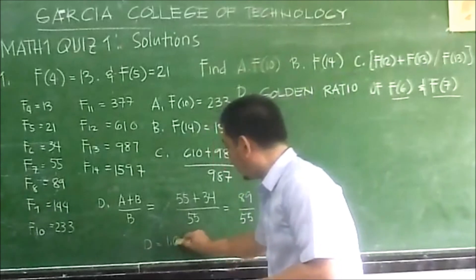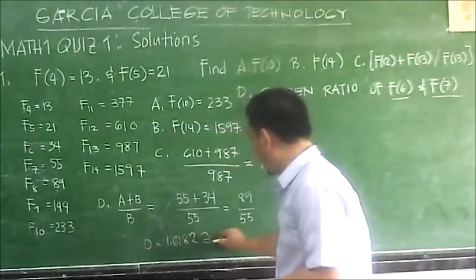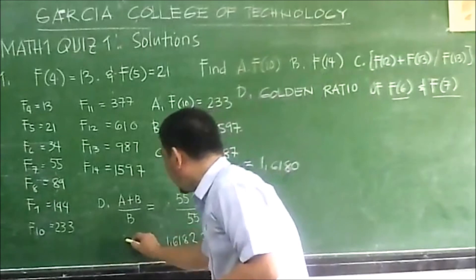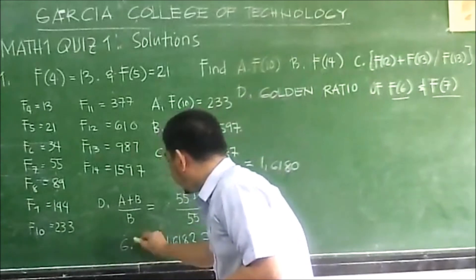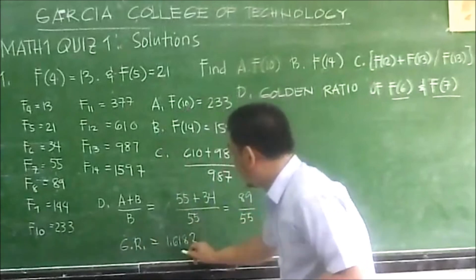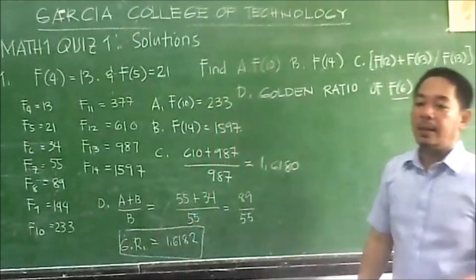Divided by 55, that will be equal to 1.6182, which is approximately equal to our golden ratio.